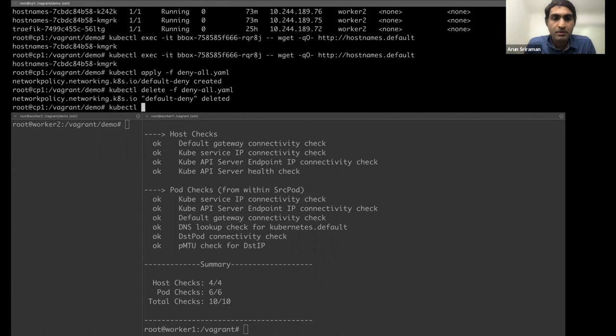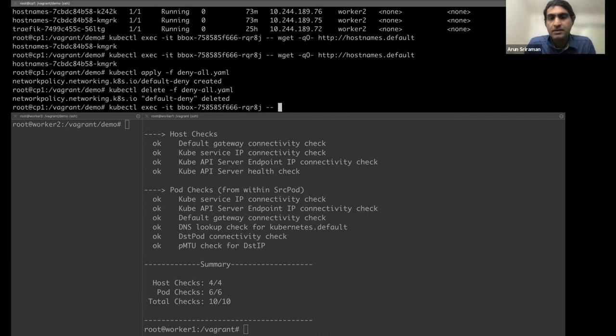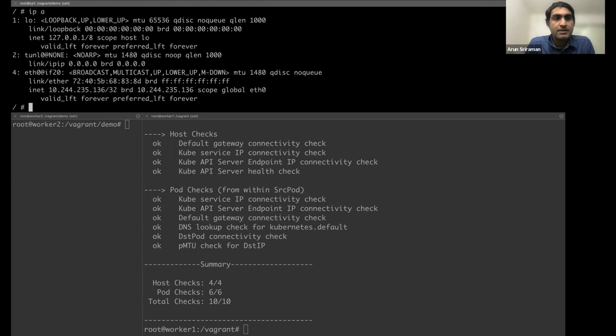What I'm going to do is I'm going to do a kubectl exec -it. Let's go into busybox and change the MTU to something bigger, 1500. And 1500 is normal, right? So it's the default size.